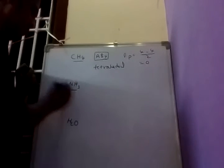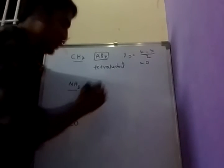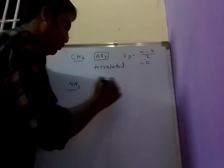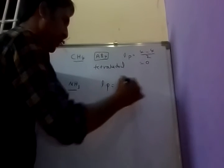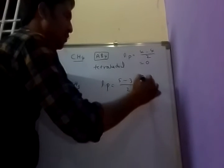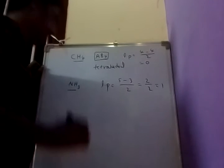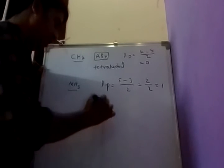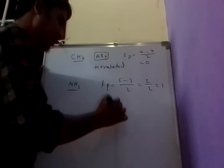Next, NH3 ammonia. Number of lone pairs equals group number (5) minus bonded atoms (3) divided by 2, that equals 1 lone pair. It is AB3E type molecule.